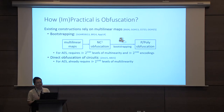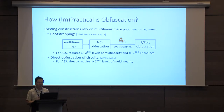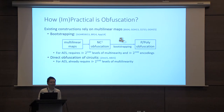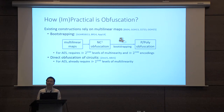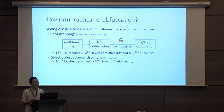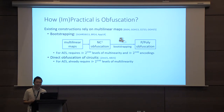A subsequent line of work by Zimmerman, as well as Applebaum and Brakerski, looked at directly obfuscating circuits, and this sort of resolves the problem where we have to publish 2 to the 100 encodings. Unfortunately, due to the noise growth in existing multilinear map candidates, the levels of multilinearity required is still over 2 to the 100, and thus very, very far from concretely realizable.